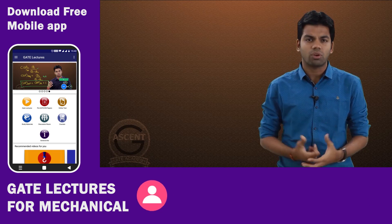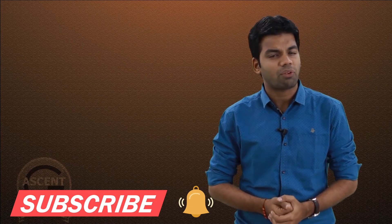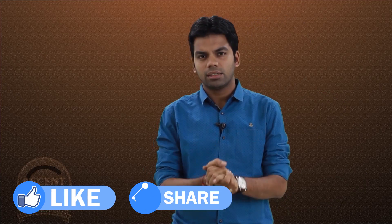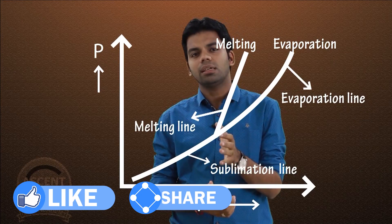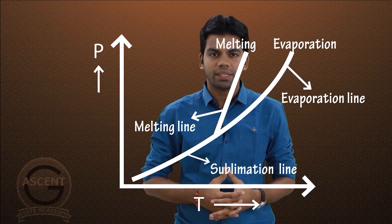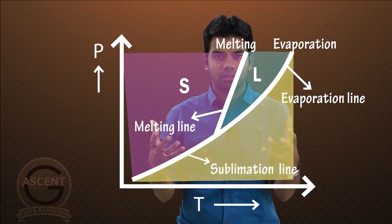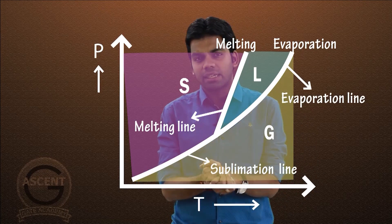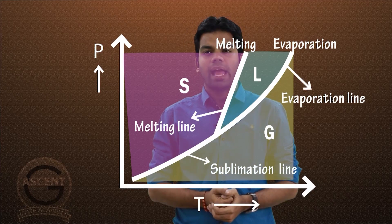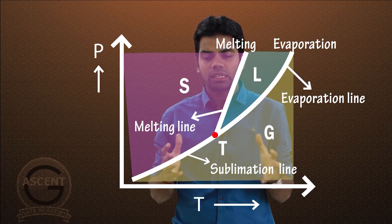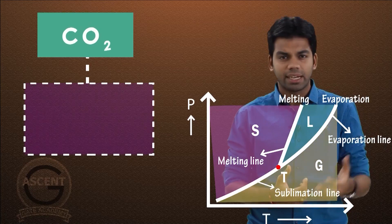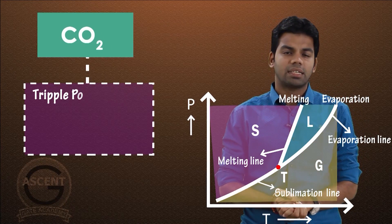It may be difficult to achieve the triple point for water because 4.58 mm of Hg is very low pressure. But we can achieve it easily for carbon dioxide. In the PT diagram for CO2, the melting curve has a positive slope — unlike water where it is negative. The triple point of carbon dioxide is around 3885 mm of Hg, which is approximately 5 atmospheric pressure, and the triple point temperature is around 216.5 Kelvin.